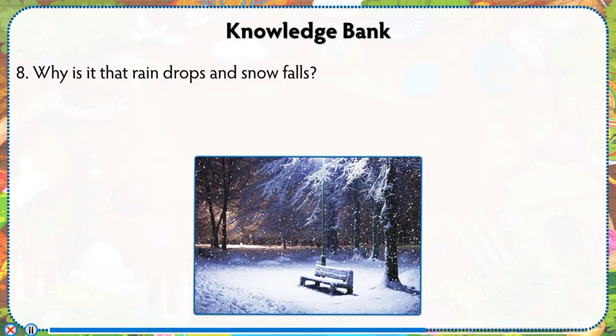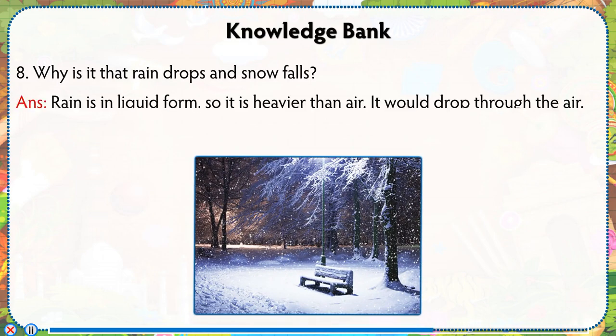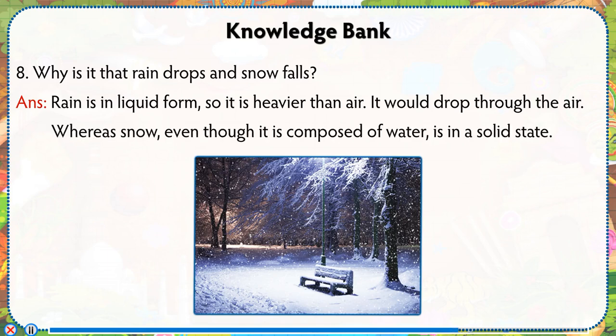Why is it that rain drops and snow falls? Rain is in liquid form, so it is heavier than air and would drop through the air. Whereas snow, even though it is composed of water, is in a solid state, so it would fall.